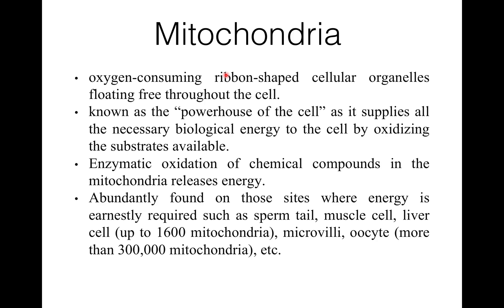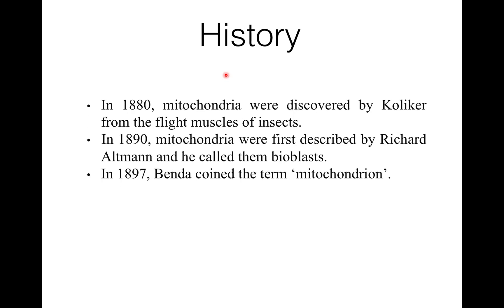Now history. In 1880, mitochondria were discovered by Kolliker from the flight muscles of insects. But in 1890, mitochondria were first described by Richard Altman and he called them bioplasts.